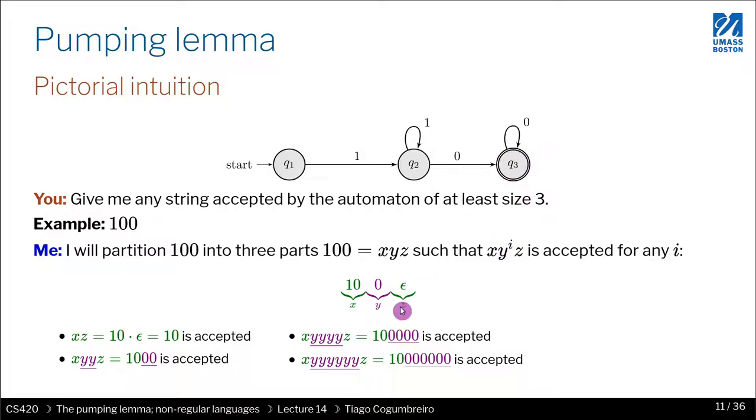Let's discard z. Now I can replicate that zero in the middle as many times as I want and any string generated by pumping that y will also be accepted by the automata. Another thing that can happen is I can omit y altogether and the generated string is also in the automata.